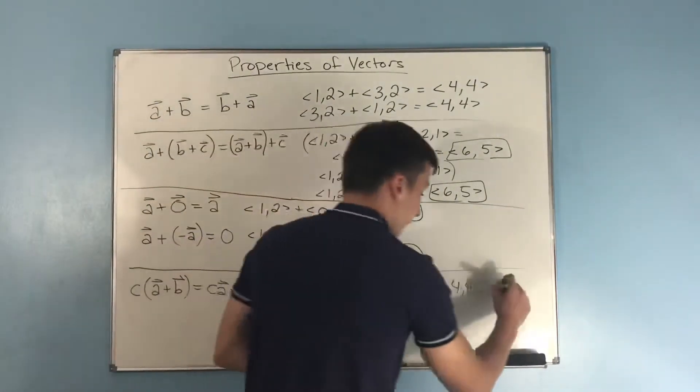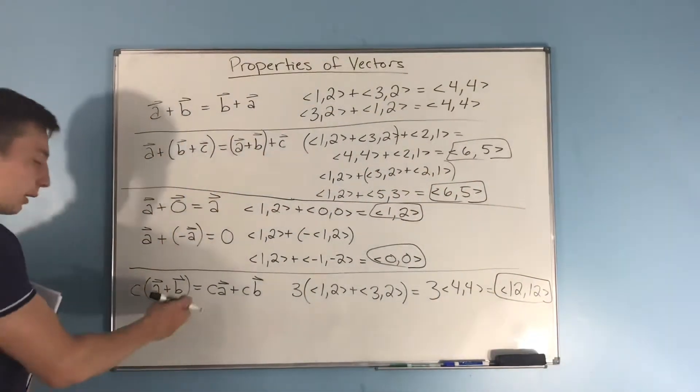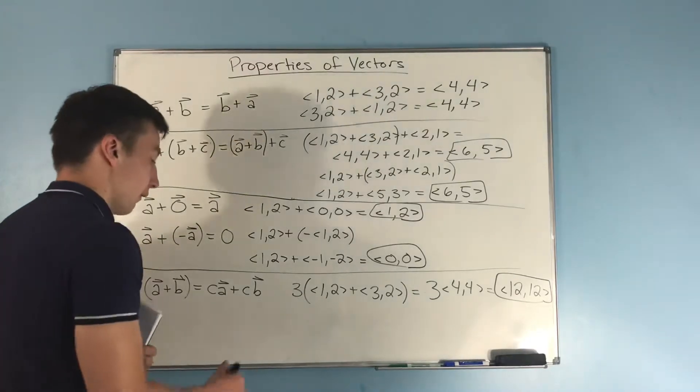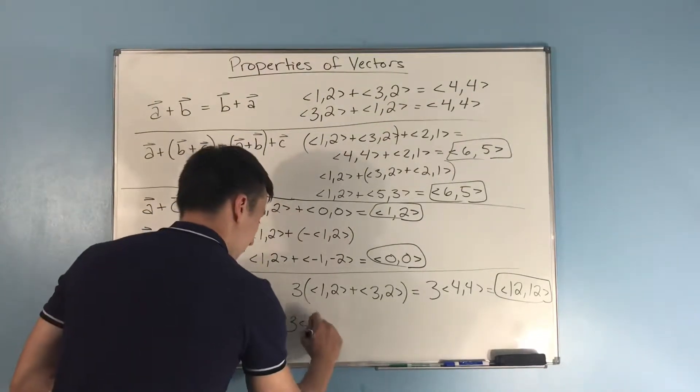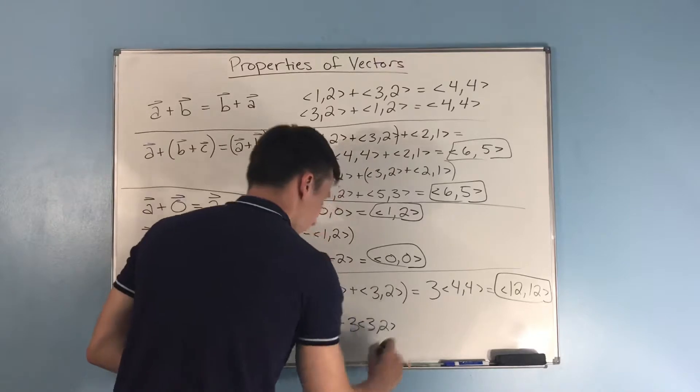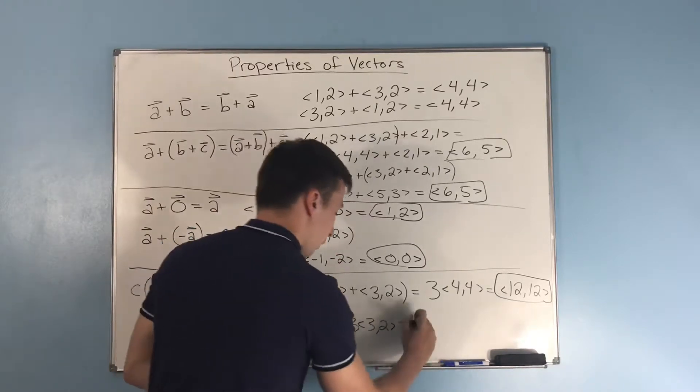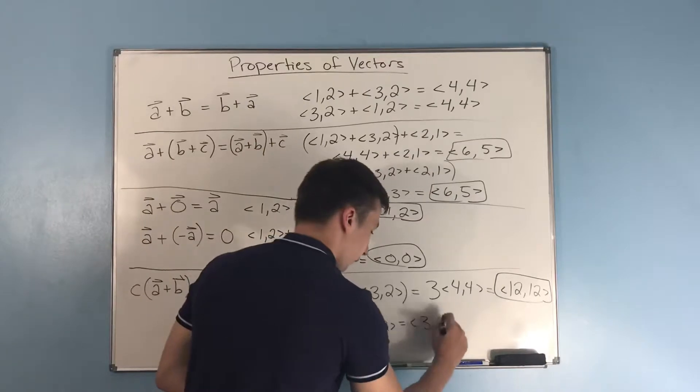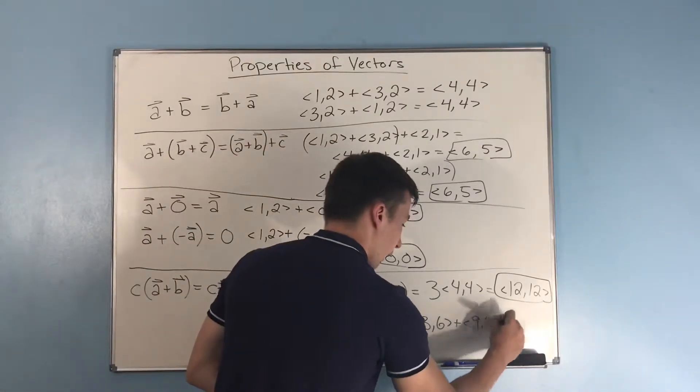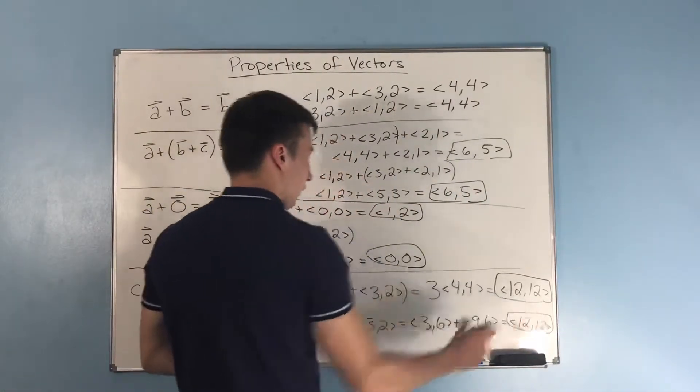When we multiply that 3 through, we get 12,12. So if we were to distribute that 3 first to each of these vectors separately, we should still get 12,12. Let's see if that works. We have a 3 times 1,2 plus 3 times 3,2. Well, that's the same thing as 3,6 plus 9,6. And of course, that is equal to 12,12 when you add those vectors together. 3 plus 9 is 12, 6 plus 6 is 12.